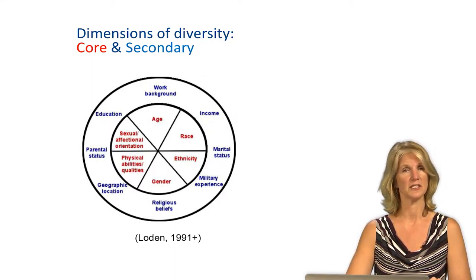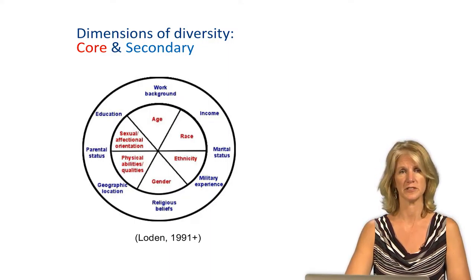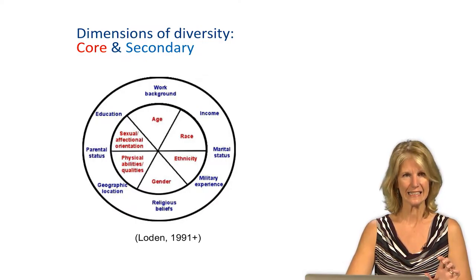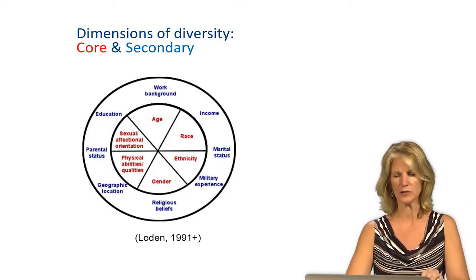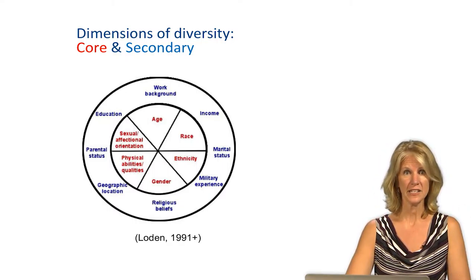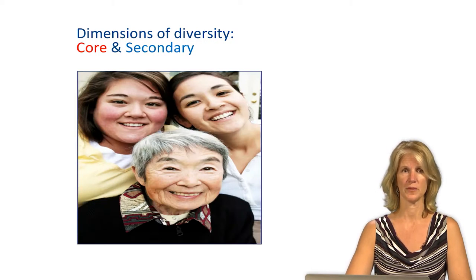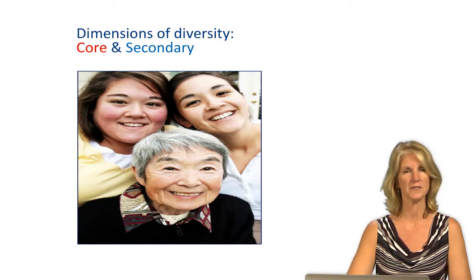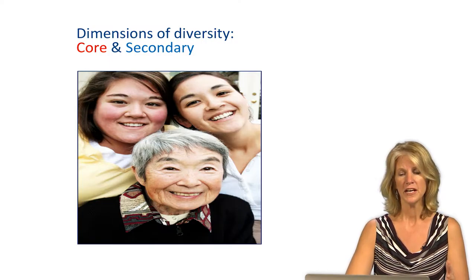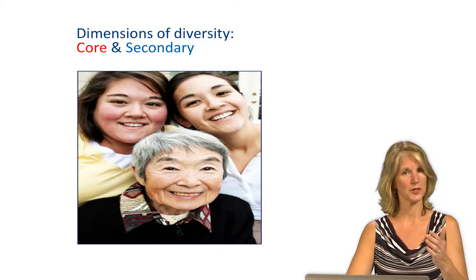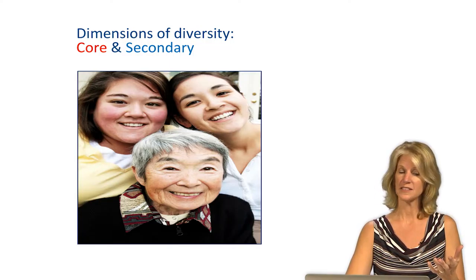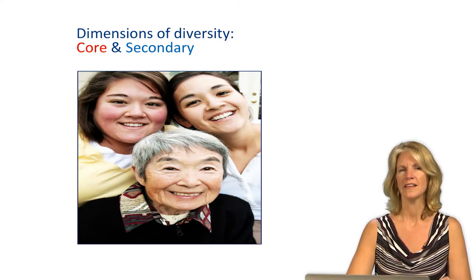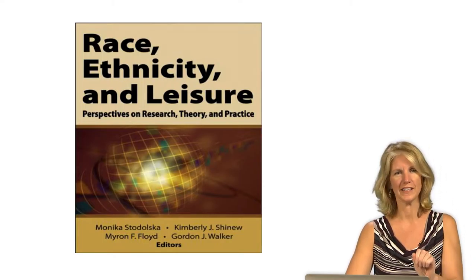Much less has been investigated related to religion or military status, although there is growing research in these areas. Rarely, if ever, are these variables considered in isolation because of the intersectionality and how they relate to each other. For example, age, gender, and ethnicity consistently interact to influence behavior. An older Asian-American woman may share some common factors influencing recreation preferences but may have stronger motivations to be with family — part of her generation and culture — as well as additional health, language, and safety concerns related to her age. It's important to note that entire texts have been written on just one of these dimensions.